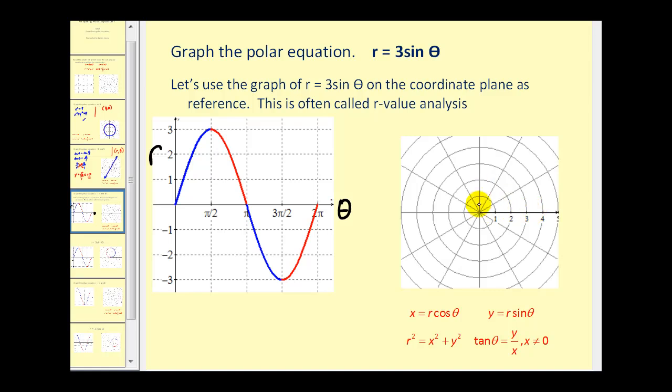So what that's telling us is, remember theta would be zero here and theta would be pi over two here. So in this region, the radius increases from zero to three. And if we plotted enough points, we would see that it looks something like this.